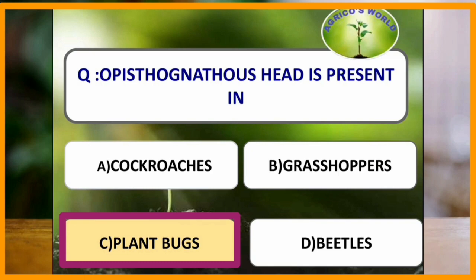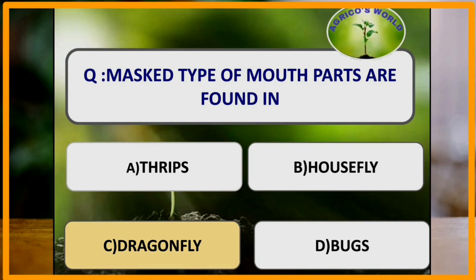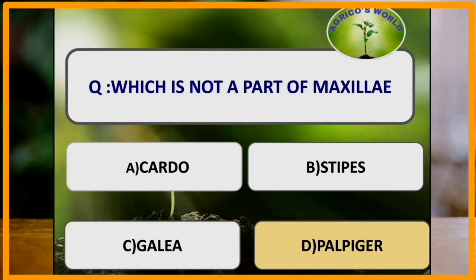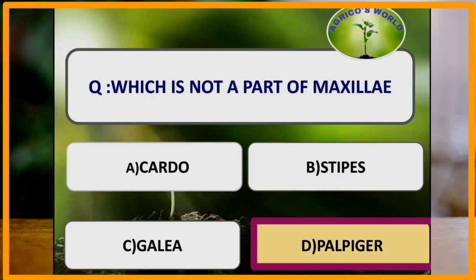Masked type of mouthparts are found in which of the following insects? Masked type of mouthparts are found in dragonflies. Which is not a part of maxillae? Cardo, stipes, and galea are all parts of maxillae, but palpiger is not a part of maxillae.